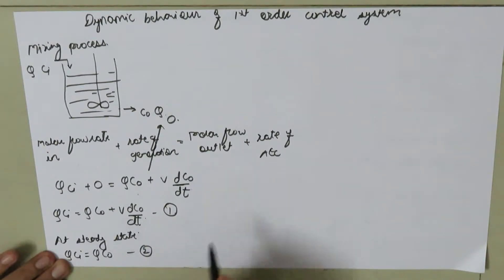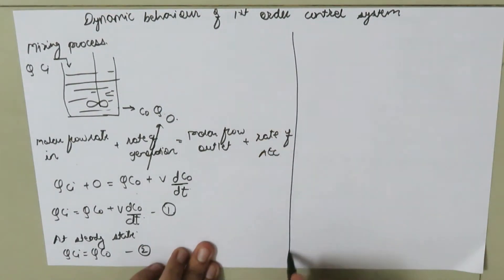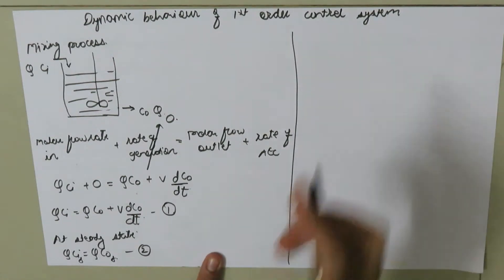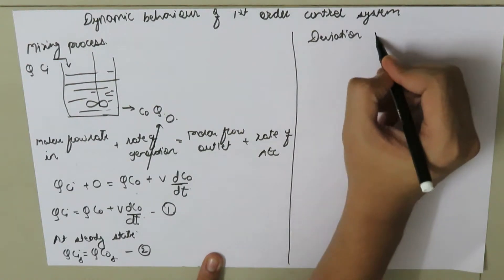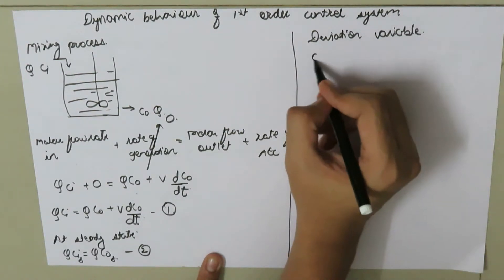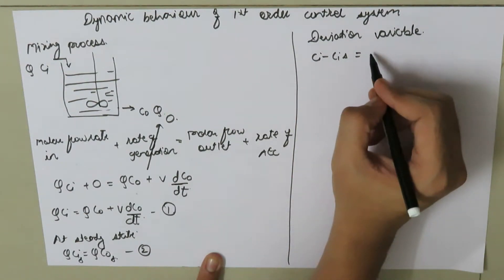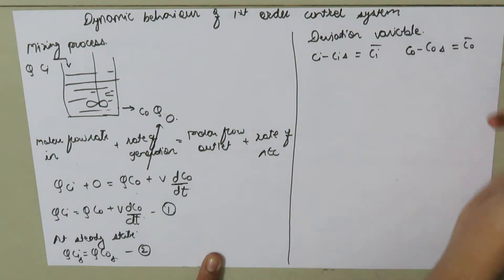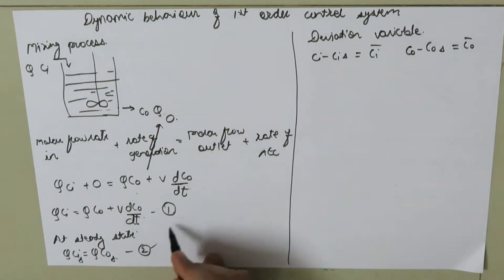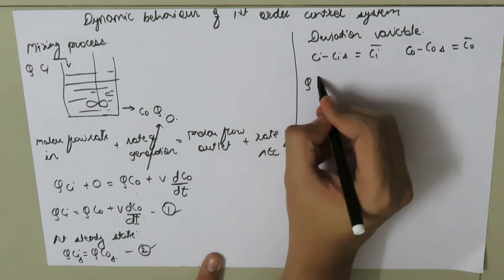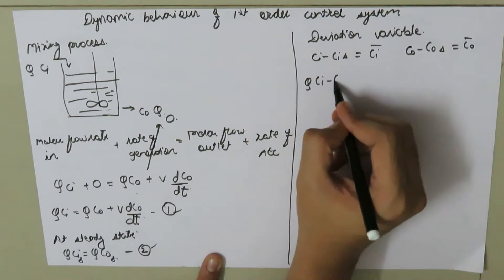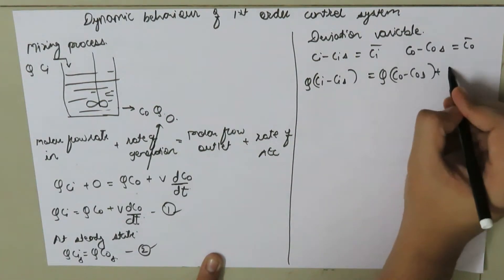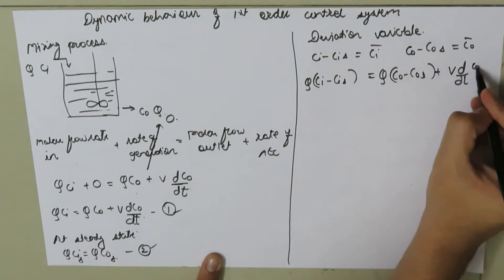Now we introduce the steady-state subscript S and define deviation variables: CI bar equals CI minus CI_s, and CO bar equals CO minus CO_s. Subtracting equation two from equation one gives Q times (CI minus CI_s) equals Q times (CO minus CO_s) plus V times d/dt of (CO minus CO_s).